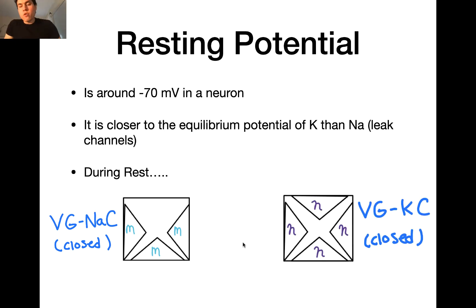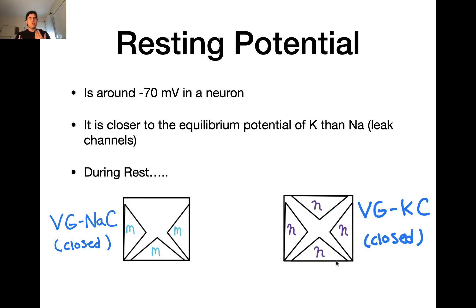We also have the voltage-gated potassium channel, which has four activation gates called N gates. These N gates open in response to depolarization but do so really slowly — much more slowly than voltage-gated sodium channels. So voltage-gated sodium channels will open before voltage-gated potassium channels open. During rest, the voltage-gated sodium channels are closed but not inactivated, and the voltage-gated potassium channels are closed.